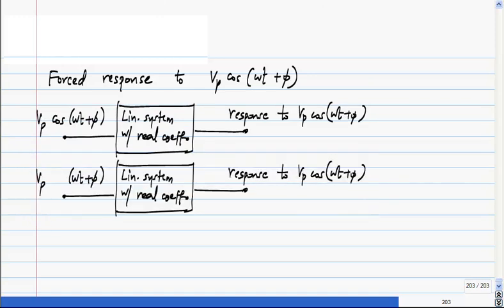If I had sine here I would get something else which is a response to Vp sin(ωt + φ). We also know that the forced response, by the way I am talking here only of the forced response or the steady state response. So forced response to Vp sin(ωt + φ), then in this case what we can do...